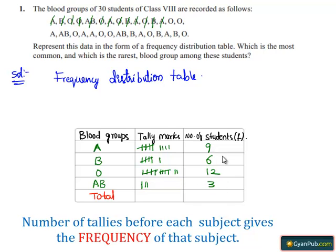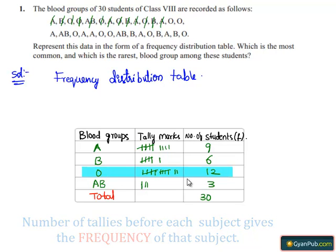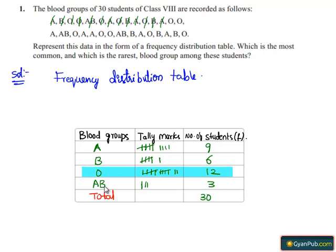The total number of frequencies will be 30. And here, if we observe in the frequencies, O is the most common and AB is the rarest one. Hence.